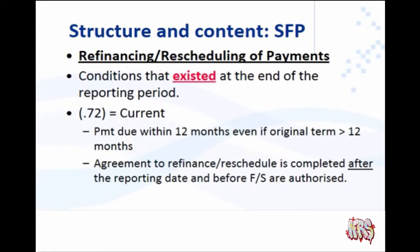As a summary for paragraph 72: with refinancing and rescheduling of payments, look at the conditions that existed at year end — this is the same as your IAS 10 knowledge. At year end, if you need to pay within 12 months it is a current liability, even if the original term was longer than 12 months. It is also current if you arrange after year end to refinance the loan on a long-term basis.